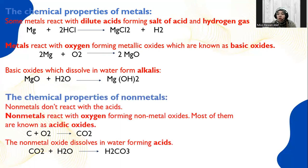Chemical properties of non-metals: Number one, non-metals do not react with acids. Two, non-metals react with oxygen forming a non-metallic oxide, also called acidic oxide — for example, carbon reacts with oxygen to form carbon dioxide. Three, when a non-metal oxide dissolves in water, it forms an acid — for example, carbon dioxide reacts with water to form carbonic acid.